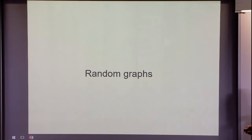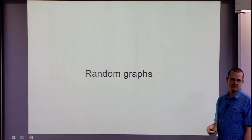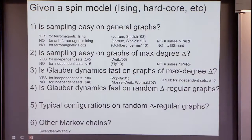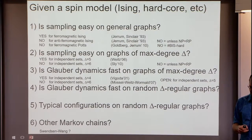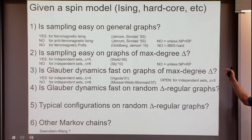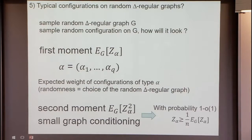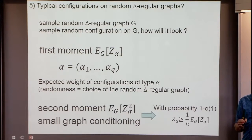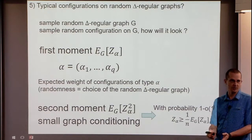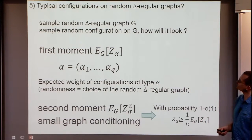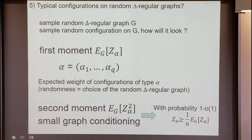Let me say a few things about random graphs. The hope is that we get insight about random graphs from this analysis. The question we want to understand is: how does a spin model behave on a random delta-regular graph? Does Glauber dynamics mix? Does Swendsen-Wang mix? Before looking at this, we need to understand the typical configurations of the model on a random delta-regular graph.